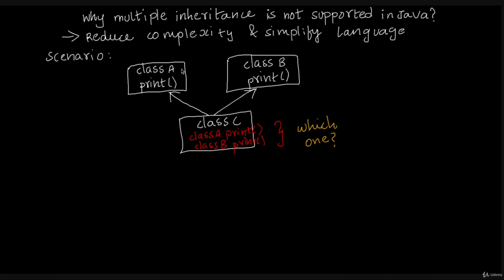Suppose class A has a method called print method, and class B also has a method called print method. Now class C is set up, and if you want to access the print method...